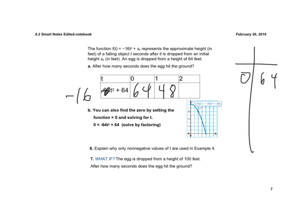Plug 2 in, 2 squared is 4, 4 times -16 is -64, plus 64 would be 0. So I have my graph here, and as you can see, it hits the ground after 2 seconds.